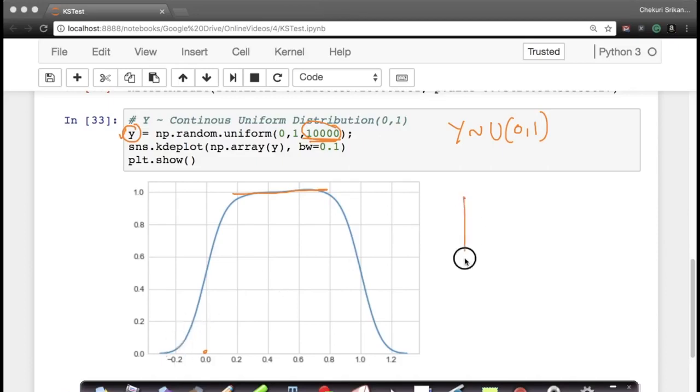The actual distribution will look like this. Between 0 and 1, my theoretical distribution should look like this for a uniform distribution. And this value will be 1.0.